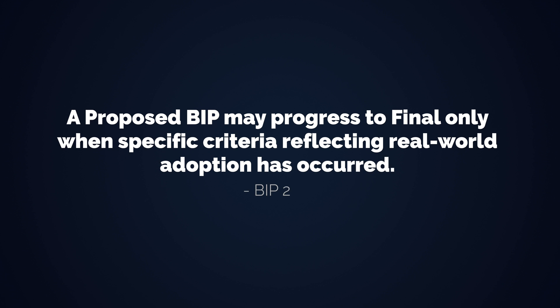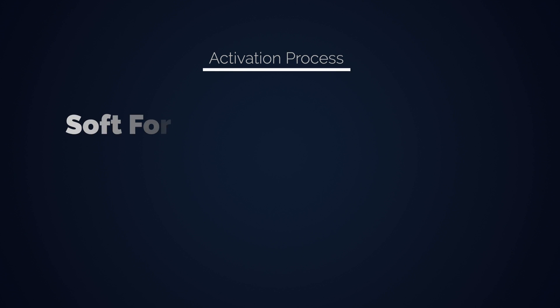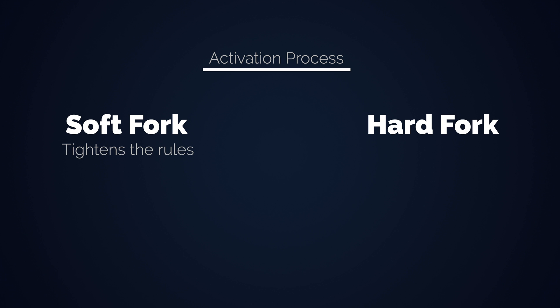In case you want to learn more about the approval process and structure of a proposal, you can check BIP2, which tells you the whole process. Before we cover some of the current drafts, I quickly want to talk about the activation of a BIP — the progression of how it reaches final status. A crucial differentiation are softforks and hardforks. Both are updates to the network, but they are very different from one another. The easiest way to understand the two is that a softfork tightens the rules of the network, while a hardfork expands the rules of the network.